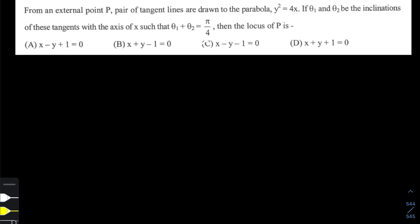For any conic, the pair of tangents is given by a general equation T² = SS₁. I'm assuming all my viewers are already aware of what T, S, and S₁ stand for.